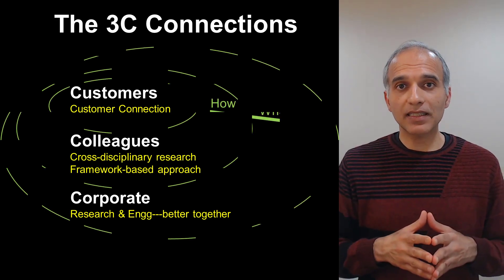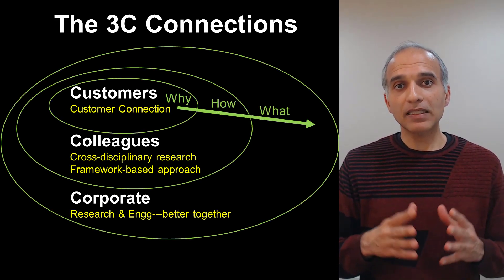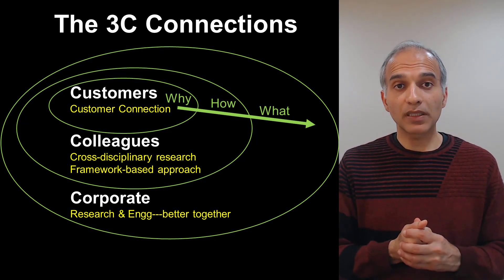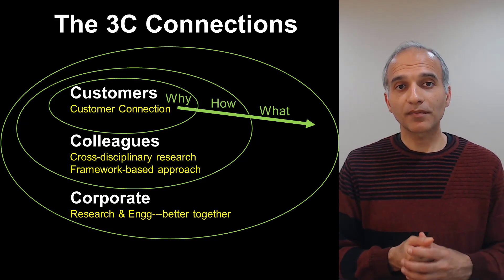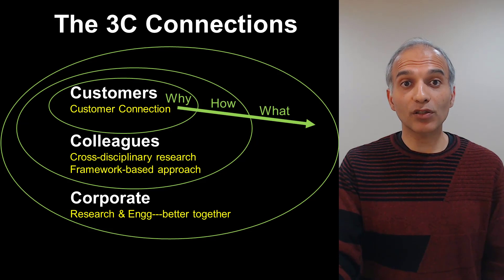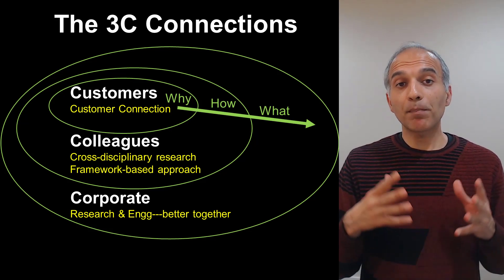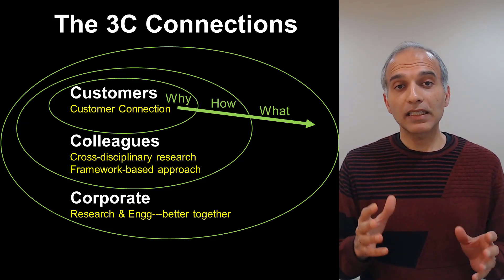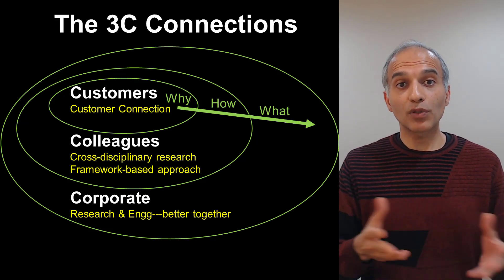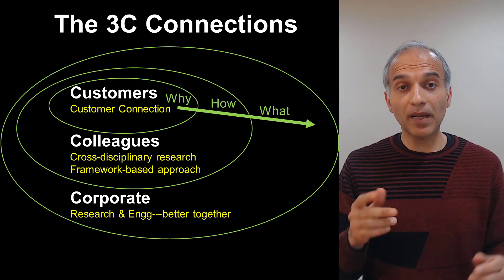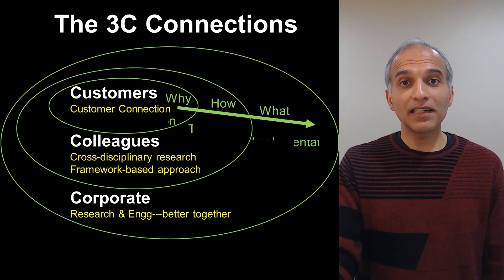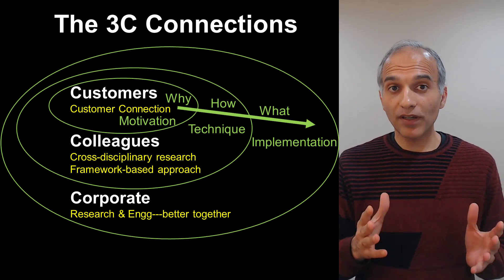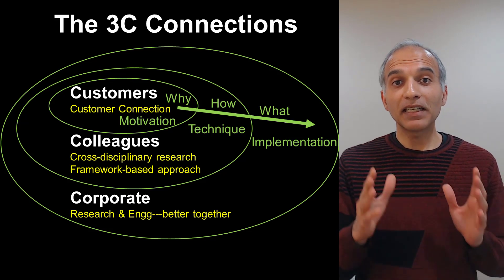We can put these three connections as part of the golden circle paradigm that Simon Sinek has talked about. First comes why — why do we do what we do? This is where we start with our customers. Then comes how — this is where we stand on the shoulders of our giant colleagues and partner with them on cross-disciplinary research for disruptive innovation. And finally, the what — working with our industrial partners to deliver customer value and leveraging their feedback to close the loop. Interestingly, this isn't different from the structure of research papers we write: first comes motivation, then the technique, and finally its implementation.